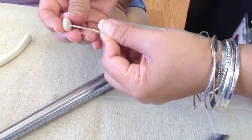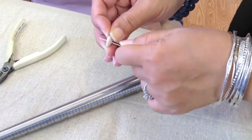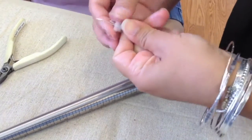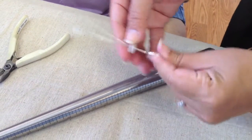Put your puka shell on and you can have it either facing outwards so you can see the spiral or flip it over and it can be domed. Either way, it's up to you.